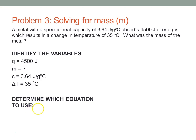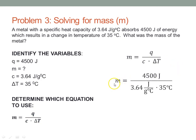Now we're ready to determine which equation. Rearranging, we get M equal to Q divided by C times delta T. Plugging in the numbers — mass equals Q divided by C times delta T. Always check your units: joules divided by joules equals 1 and cancels, degrees C divided by degrees C cancels, leaving us with 1 over 1 over grams, so the unit ends up being grams.